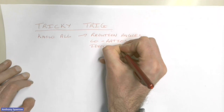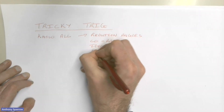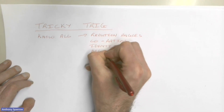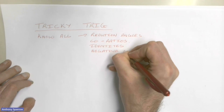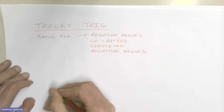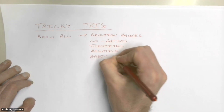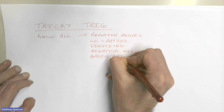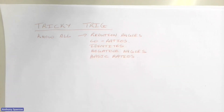If you don't know your identities you're going to have problems. You need to know your negative angles, and if you don't know those you'll have problems. Last but not least, your basic ratios. If you know all of those, you know that you're on a good footing for starting a trigonometry paper.